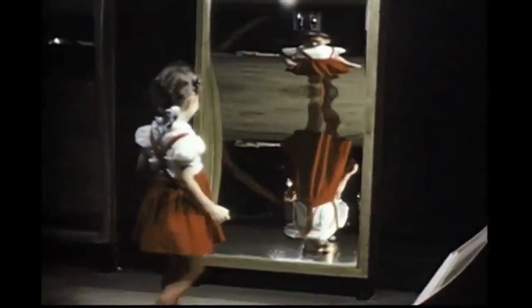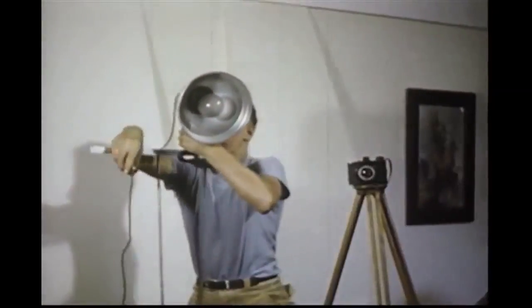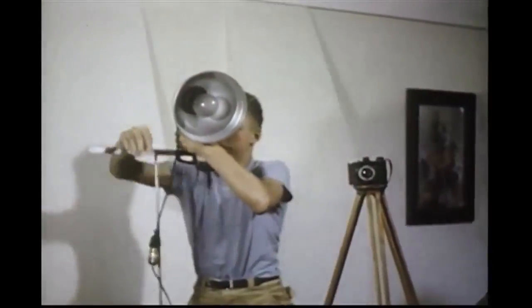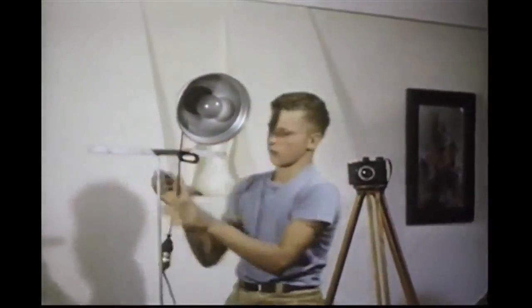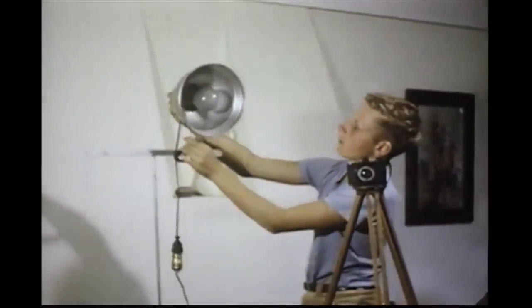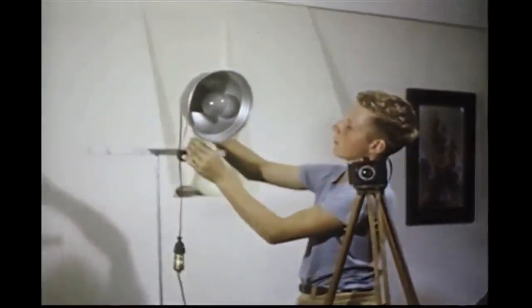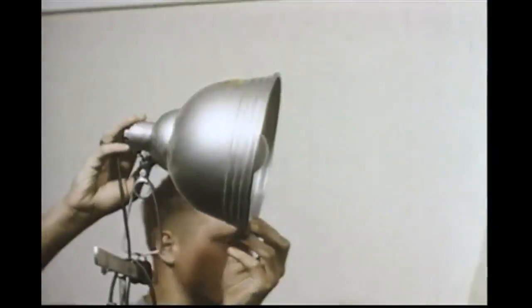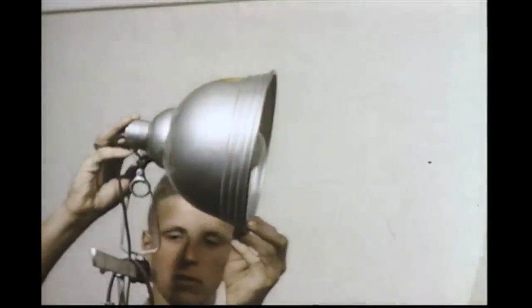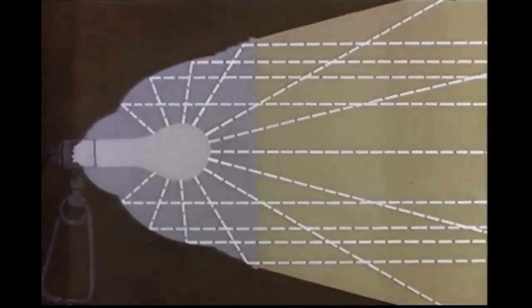These principles are used in the trick mirrors you often see in amusement parks. Bud makes a more practical use of a curved mirror when following his hobby of photography. The interior surface of this reflector is curved so that the light is directed toward the picture-taking area.